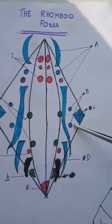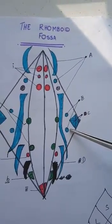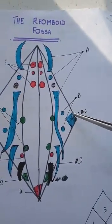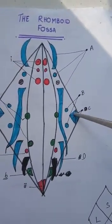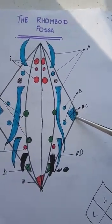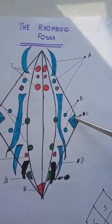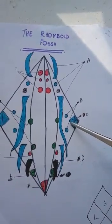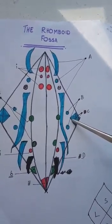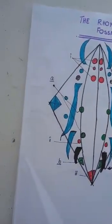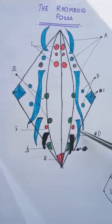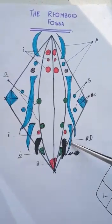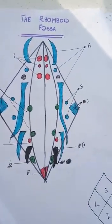Then we can see the anterior and posterior cochlear nuclei. Here we can see superior, inferior, medial, and lateral vestibular nucleus — the vestibular nuclei. Then the final last one is the solitary nucleus.